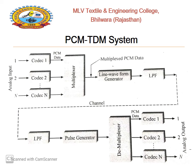The outputs from various codecs are combined and multiplexed into a single bitstream using a multiplexer. The bitstream is converted into a baseband waveform by a line waveform generator. A low-pass filter is used for band-limiting the baseband signal. This constitutes the transmitter section.